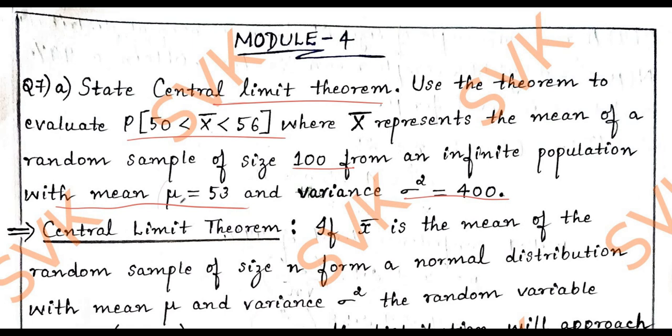They may provide this mu value with the μ symbol and σ² or else just give μ = 53 and variance is 400. You need to know that this value represents μ and this value represents σ², or else instead of variance, they can provide standard deviation, which directly represents the σ value.